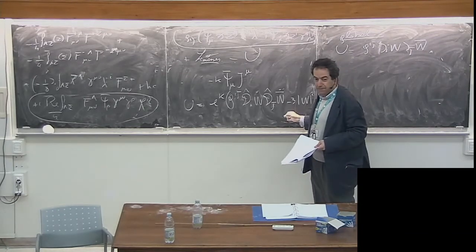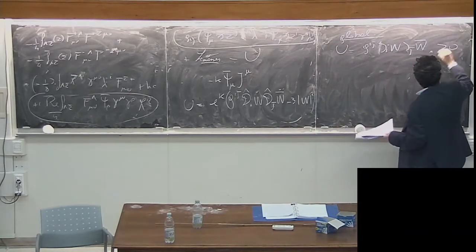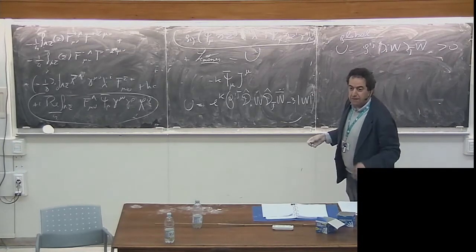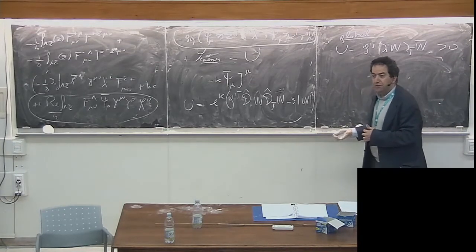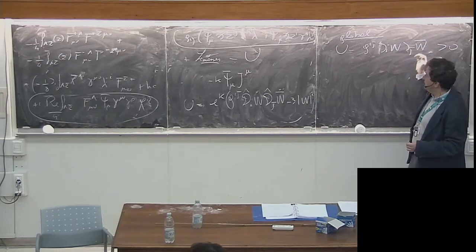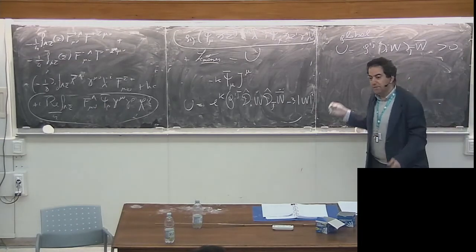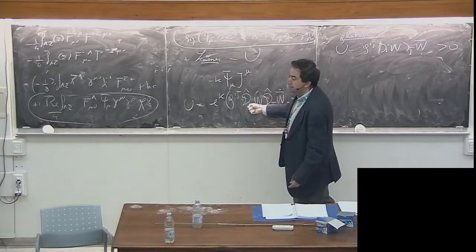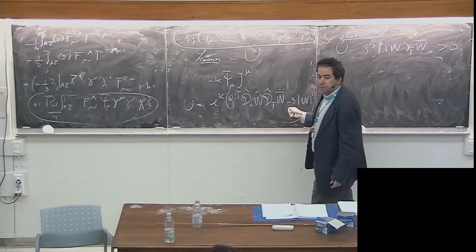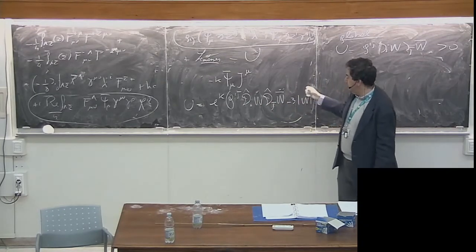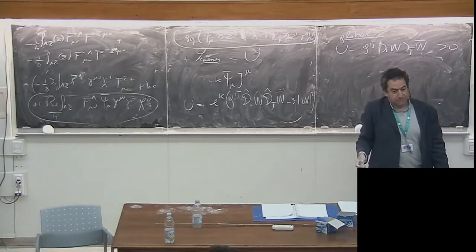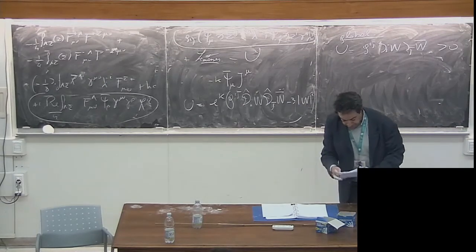In the global case, by eliminating auxiliary fields, you find the scalar potential is g^{i jbar} D_i W D_{jbar} W bar — this is positive. In the global case the scalar potential is positive. What happens in supergravity is that the presence of gravity introduces this additional negative term, so it's no longer positive definite.